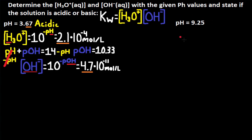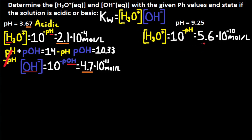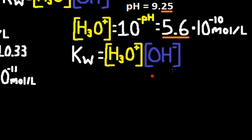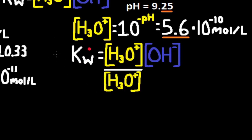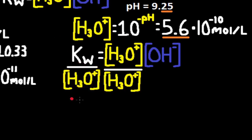For pH = 9.25, we get H3O+ concentration using H3O+ equals 10 to the negative pH. 10 to the negative 9.25 gives 5.6×10⁻¹⁰ moles per liter. Our pH has two sig digs since it has two decimal numbers, so our answer will have two sig digs. Instead of finding pOH first, we can get OH- directly using KW equals H3O+ times OH-. We isolate OH- by dividing both sides by H3O+, giving OH- equals KW divided by H3O+.